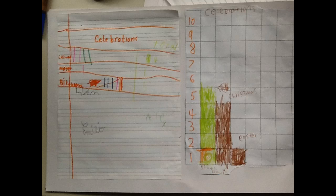I've learned birthdays is the most popular celebrations in the class. I learned that Easter is the lowest square. I learned that Easter is the smallest, only one square.